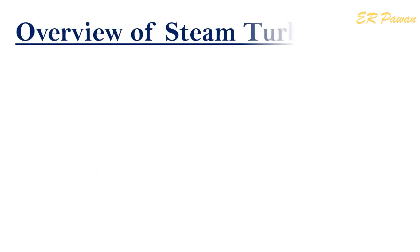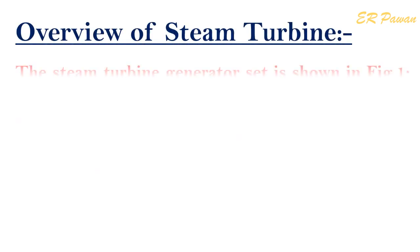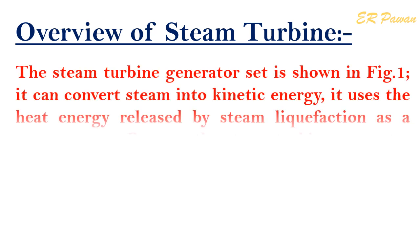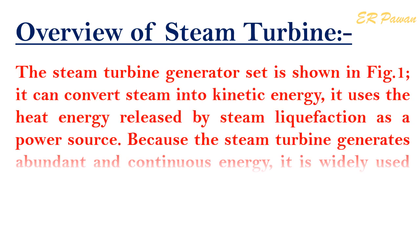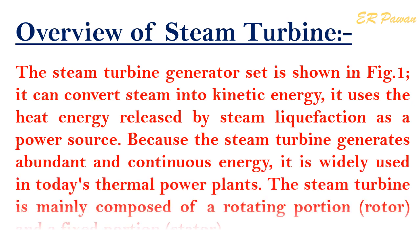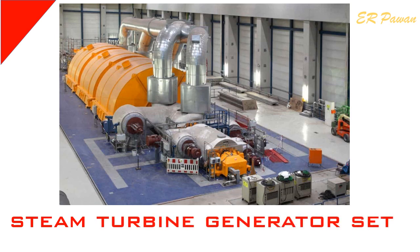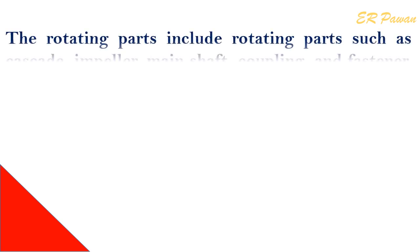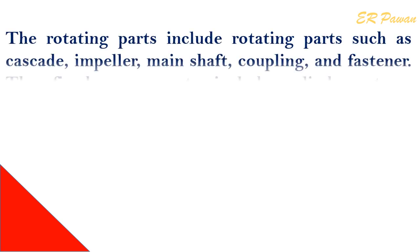Overview of Steam Turbine: The steam turbine generator set can convert steam into kinetic energy, using the heat energy released by steam liquefaction as a power source. Because the steam turbine generates abundant and continuous energy, it is widely used in today's thermal power plants. The steam turbine is mainly composed of a rotating portion and a fixed portion. The rotating parts include cascade, impeller, mainshaft, coupling, and fasteners.